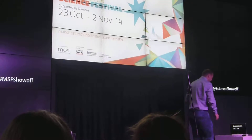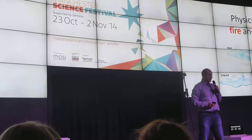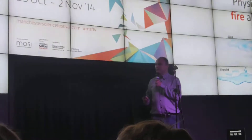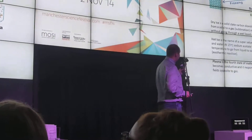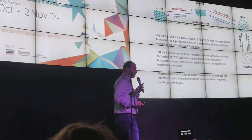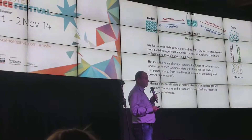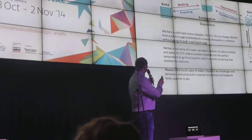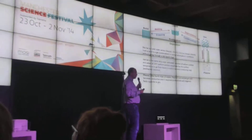Hello everyone. Let's start, see if it works. Tonight I would like to show you a few experiments about fire and ice. First, let me explain this diagram you can see above. It basically represents the four basic states of matter — there is more, but we're not going to discuss them today. As you can see, there is solid state, liquid, gas and plasma, and the arrows represent the phase change in between them.